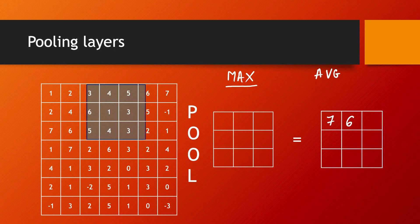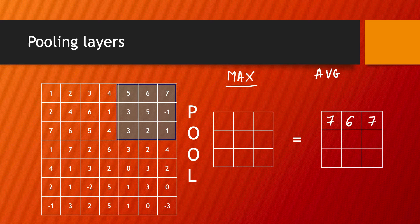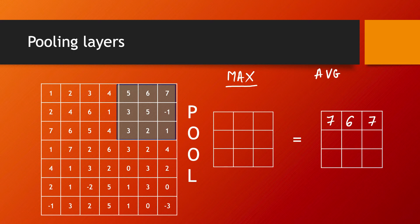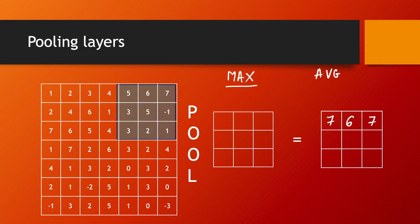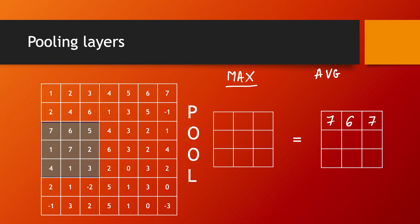We continue with our computation. Again, we have a stride of two and the filter moves here. In this location, the maximum value is seven. Then again, using a stride of two, we shift it all the way to the left but then we skip two positions downwards, and so the filter moves here.